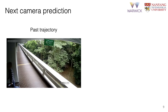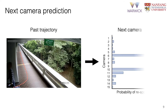Using our newly collected dataset, we consider a straightforward formulation of the MCTF task: predicting the next camera of reappearance. Given an observed trajectory in one camera view, our goal is to predict the next camera this individual will reappear in. This work explores this classification problem, though we provide full trajectory information so future works may investigate more fine-grained trajectory prediction.